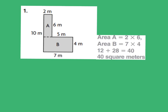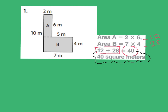The area for rectangle A — remember, area equals base times height — so my base is two meters and my height is six meters. Two times six equals 12. Now for rectangle B, the base is seven and the height is four, so the area would be seven times four equals 28. Once I have both areas, I add 12 plus 28, which equals 40. So my answer is 40 square meters for the whole shaded figure.